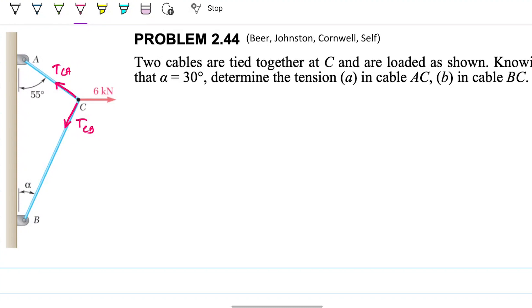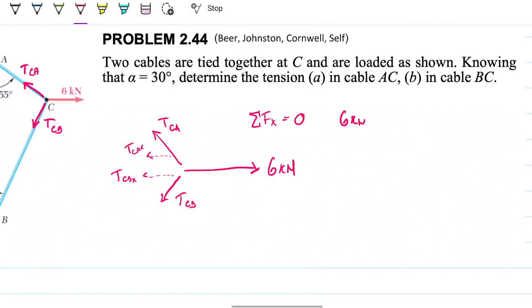If we think about it from a force standpoint, we have 6 kilonewtons there, then we have TCA here and TCB here. Really what's happening is that the x component of this TCA plus the x component of this TCB are holding 6 kilonewtons. In other words, if we take Newton's law of inertia that says for this to be static in place, the sum of forces needs to be zero, then that means 6 kilonewtons equals the x component CA plus the x component CB.